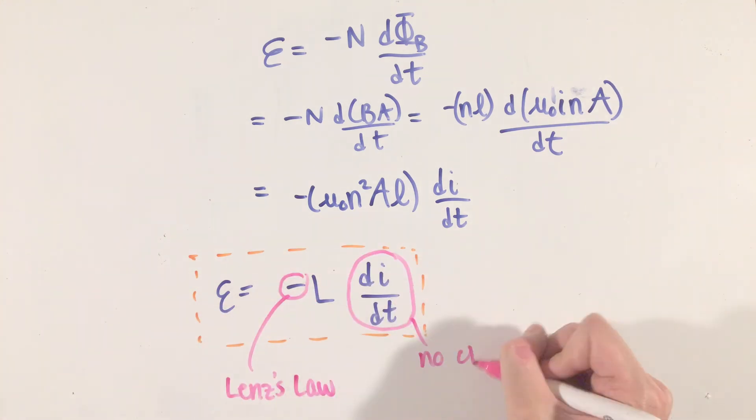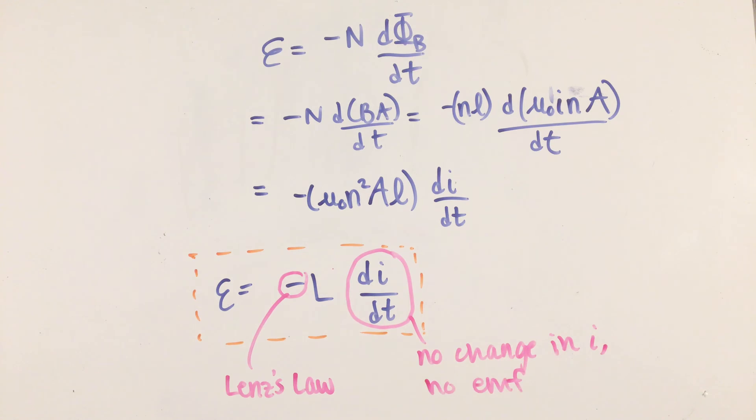In addition, this equation also tells us two extremely interesting things. First, the negative sign reveals, to no one's surprise, that the EMF induced in the inductor goes in the opposite direction of the current flow, a consequence of Lenz's law.